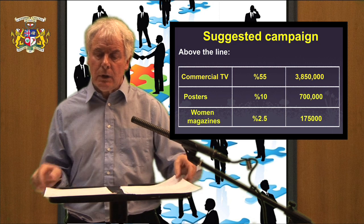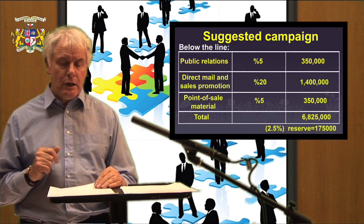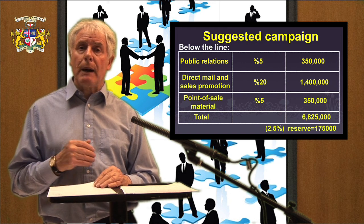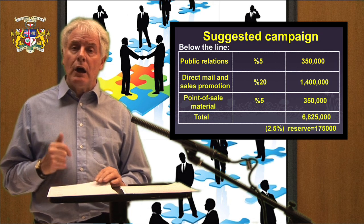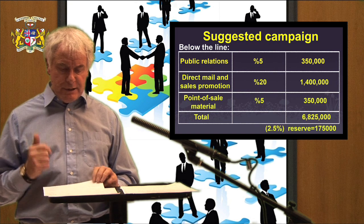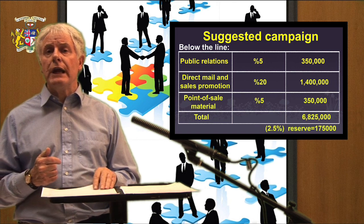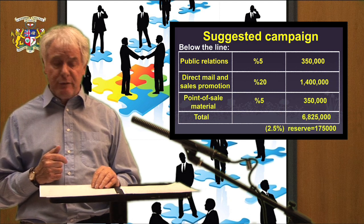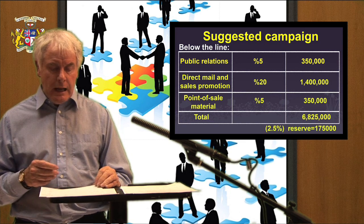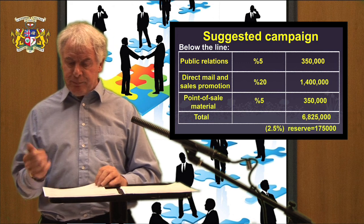We could suggest the following combination: advertising above the line on commercial television at 55% of the budget; posters at 10% of the budget; women's monthly magazines to reach more upmarket women at 2.5% of the budget. Then, linking that with below-the-line activity: public relations at 5% of the budget; a combination of direct mail and sales promotion — sending letters to potentially interested consumers, people who may have bought our products before, along with a special money-off coupon such as 30p off — at 20% of the budget; and point-of-sale material displayed within the store as a reminder when the target audience goes shopping, at another 5% of the budget.